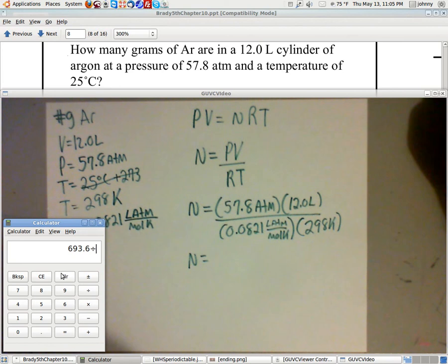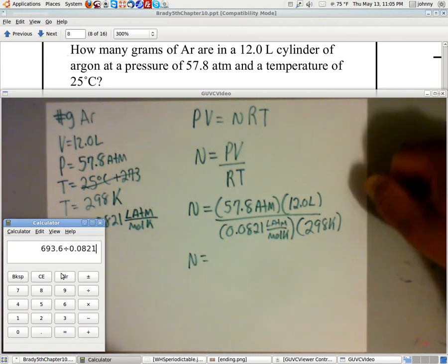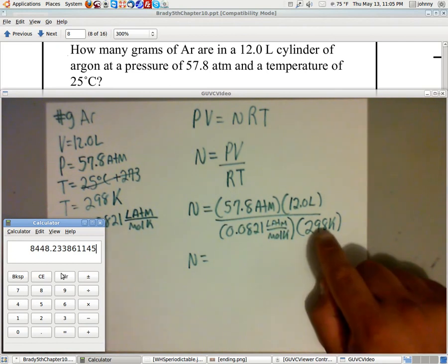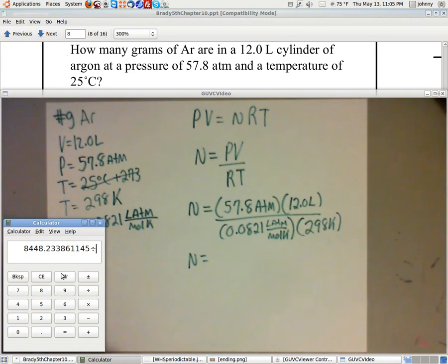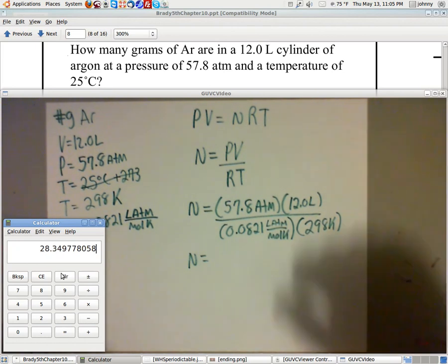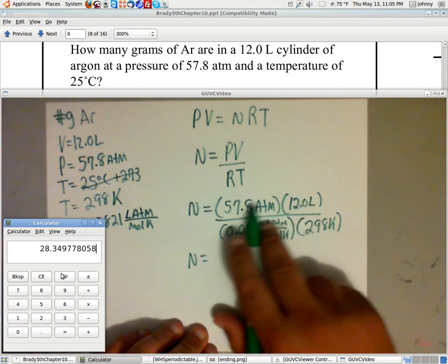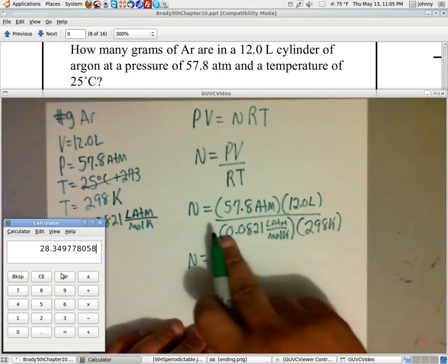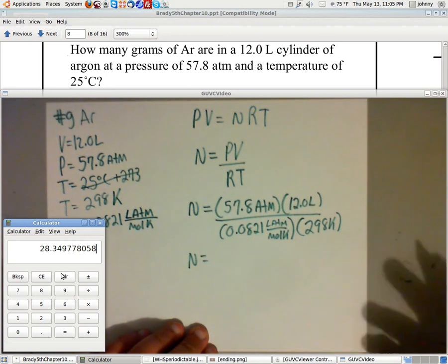Then I want to divide it by, well, my first denominator is 0.0821. And that gives me that big number. Now, look, I still got another denominator. So I need to divide this again by 298 because I've got two denominators. I just don't like using parentheses. So I just punch it in the calculator like that. And that gives me this number.